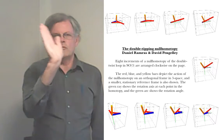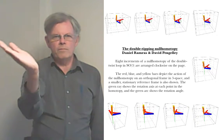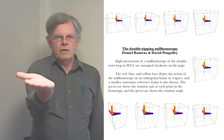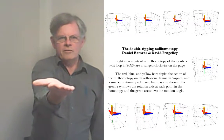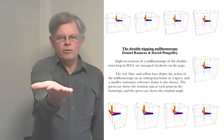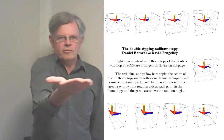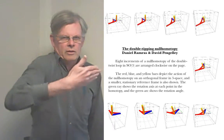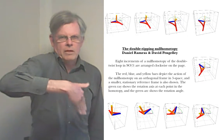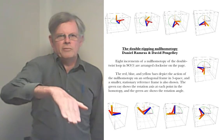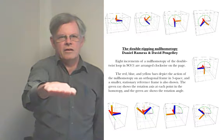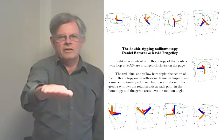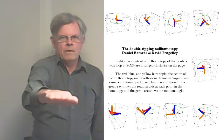Now we'll move to movie four. You can imagine that this time my hand is going to be turned four-eighths of a turn from the vertical in the middle, meaning my hand will be upside down. And it is — I've stopped it upside down. Now we'll finish the movie.